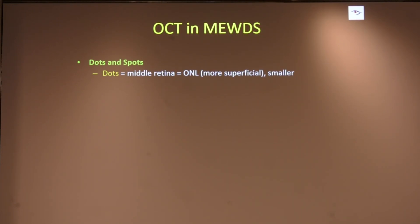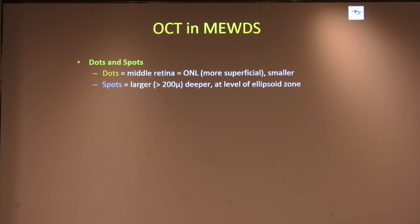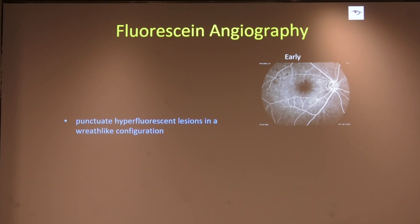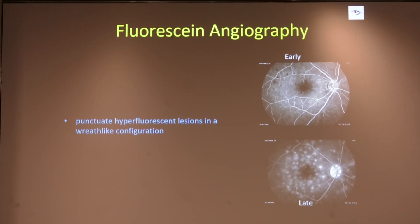On OCT, dots are mostly in the middle retina while spots are larger and at a deeper level. With MEWDS specifically, we think the outcome is better — it's like a common cold of the retina: it just happens and goes away. There is disruption in the ellipsoid zone in the deeper retina extending towards the outer nuclear layer. On fluorescein angiography, punctate lesions appear in a wreath-like configuration, which is considered pathognomonic for MEWDS.